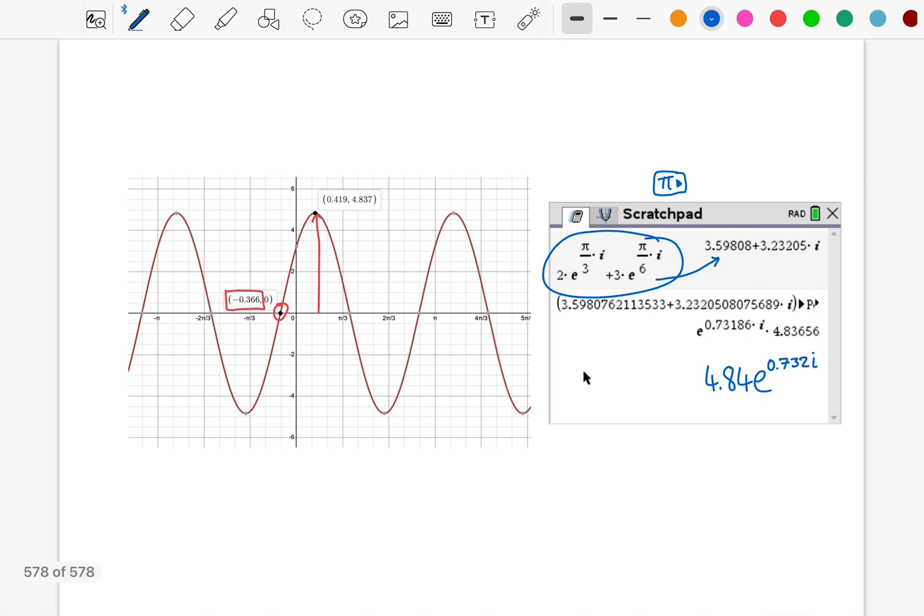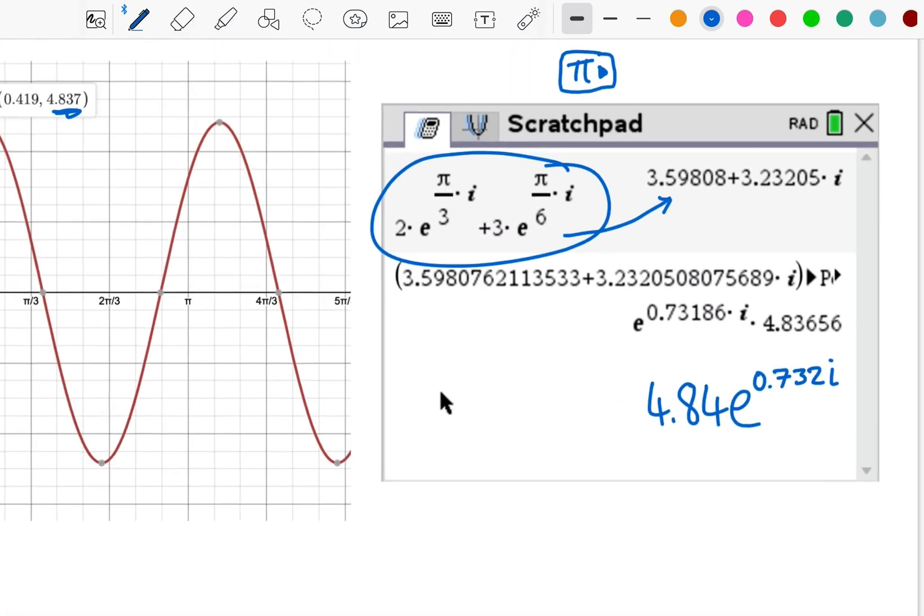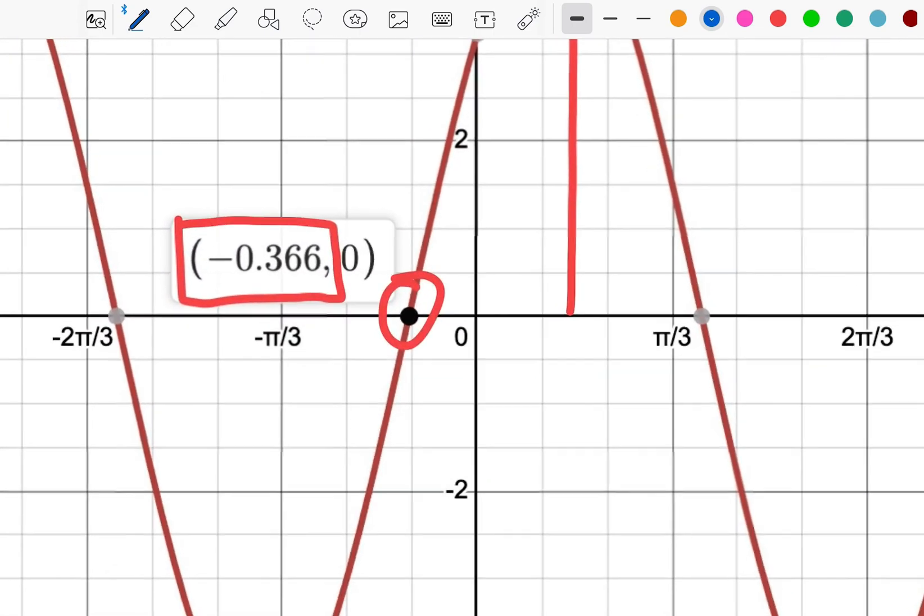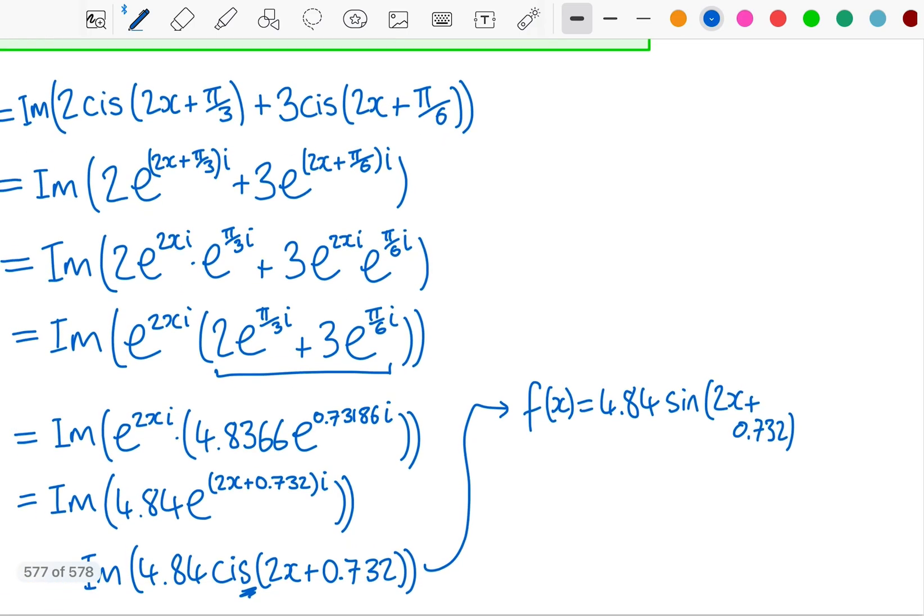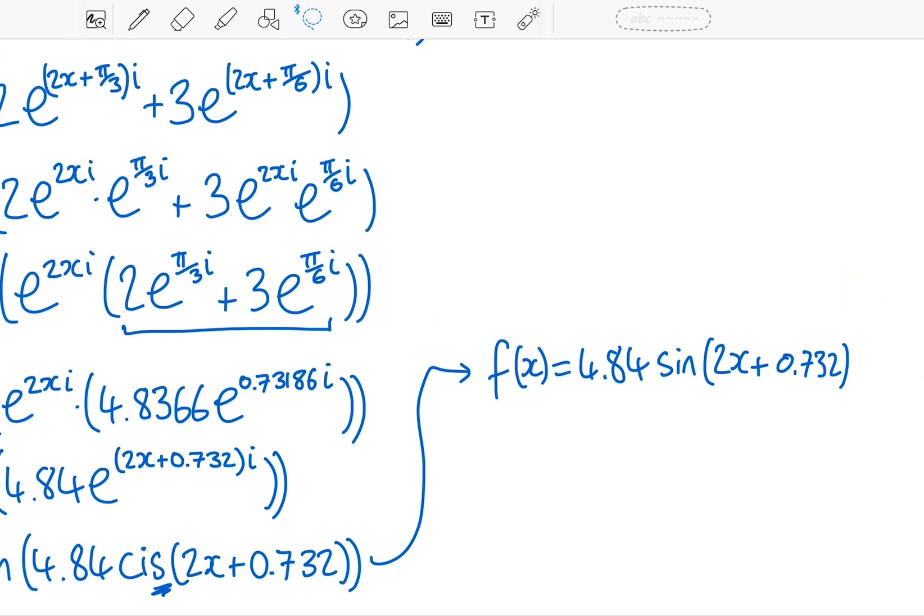I could graph that and it would be perfectly overlaying on top of this original graph. You can see the 4.84 amplitude. And if you divide our 0.732 by 2, you'll see where this 0.366 comes from as well, a shift to the left of the sine function. That is the general method for this. Once you've done a few of them, it does actually become quite a simple procedural type of question, one that you'll see in maybe somewhere in paper 1 or 2 most years.